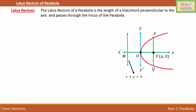Now let's drop a perpendicular from point P to the directrix, giving us PC. The directrix is a distance 'a' away from the vertex, and in the same way, the focus is a distance 'a' away from the vertex. So this distance is 'a' and this distance is also 'a'.